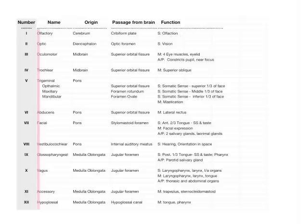Convention is whenever you write the nerve, you write the Roman numeral with it. On the test you won't see the numbers printed next to the nerves, because some questions ask you to tell me which number a nerve is. But any time you write it yourself, you should do that — write 'vagus nerve' and put Roman numeral X right next to it. Always.